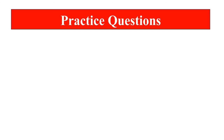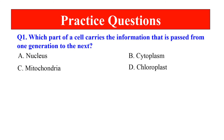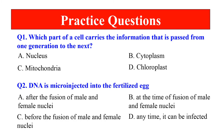Now let's look at some practice questions. Question 1: Which part of the cell carries information that is passed from one generation to the next? Options: nucleus, cytoplasm, mitochondria, or chloroplasts. Question 2: The DNA is microinjected into the fertilized egg — after the fusion of male and female nuclei, at the time of fusion, before fusion of male and female nuclei, or at any time?